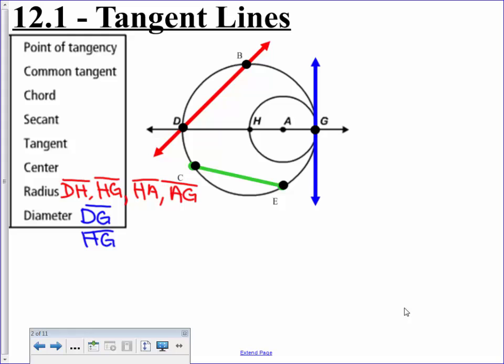The center, remember we talked about that's how we name a circle. So the center of the small circle is circle A or center A, point A. And for the larger one, we have H as our center.